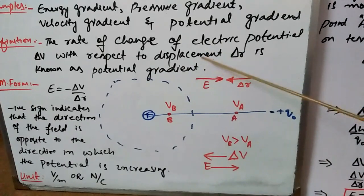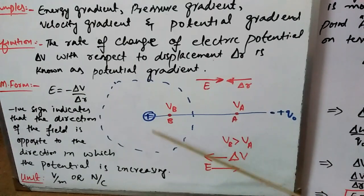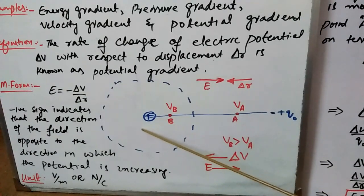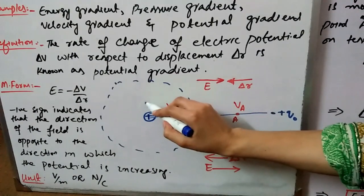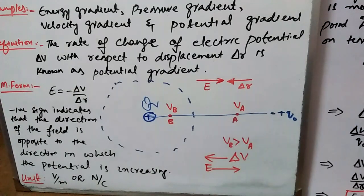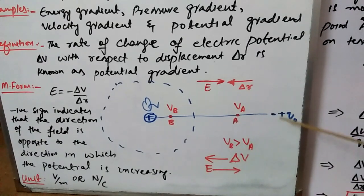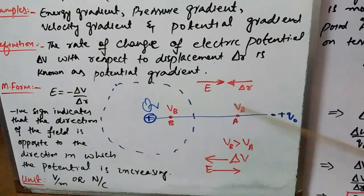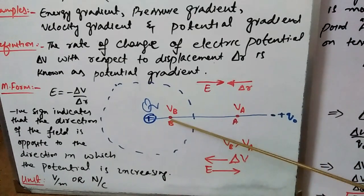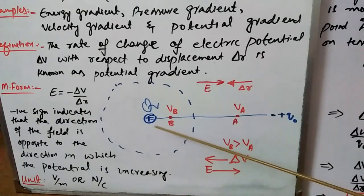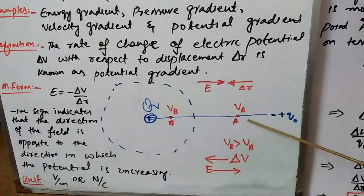For the explanation of this definition, I'm moving to this figure. Here I'm taking a plus Q source charge, and considering another test charge plus Q₀. I'm considering two points — point A and point B. Point B is within the electric field of the source charge, and point A is beyond the electric field of the source charge.